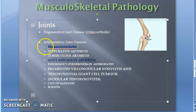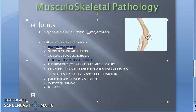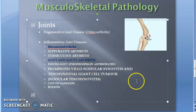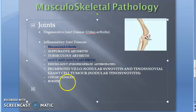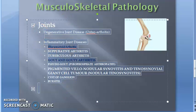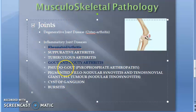In joints we have degenerative joint disease like osteoarthritis, then inflammatory joint disease like rheumatoid arthritis, suppurative arthritis, tuberculous arthritis, gout and gouty arthritis, pseudogout — that is pyrophosphate arthropathy — then pigmented villonodular synovitis, tenosynovial giant cell tumor, nodular tenosynovitis, ganglion cyst, and bursitis.